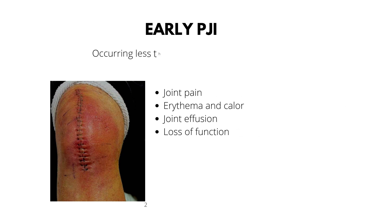Early periprosthetic joint infection occurs less than three months after the index surgery and manifests with acute joint pain and wound inflammation, which presents as warmth, erythema, and joint effusion. Patients may also complain of loss of function. Sinus tract formation and purulent drainage can also occur.